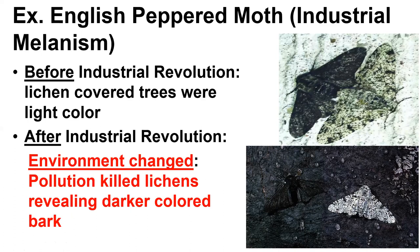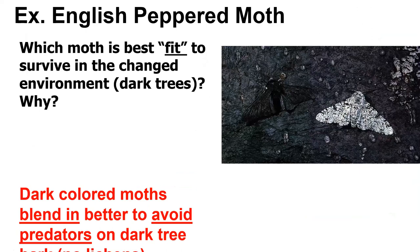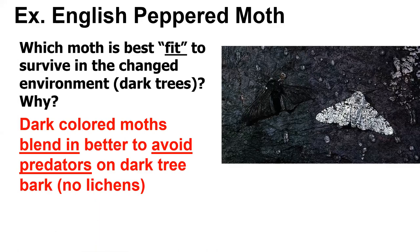We saw population changes in the population of moths — more dark colored moths survived after the Industrial Revolution because they blended in better with the new environment. It's important to realize an individual moth cannot change its color, but it can die because its color didn't help it survive. Environment determines who survives. Which moth is best fit depends on the environment — in the original environment the light moth was best fit; in the new environment, the dark moth was best fit. That's the English peppered moth, an example of survival of the fittest given a changing environment.